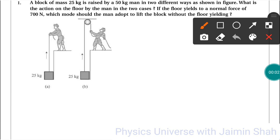Now question is: a block of mass 25 kg is raised by a 50 kg man in two different ways as shown in figure. What is the action on the floor by the man in the two cases?